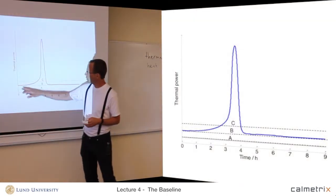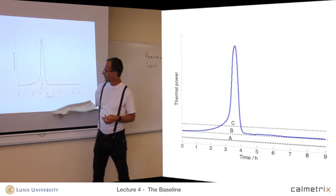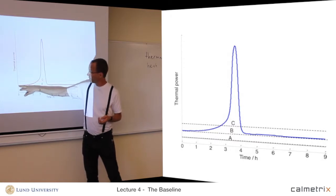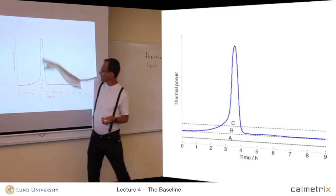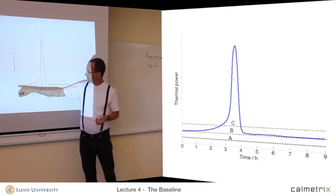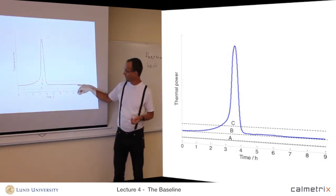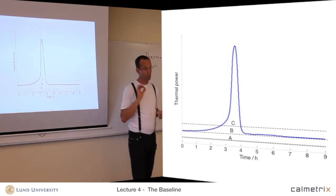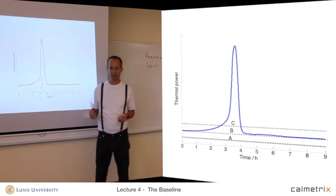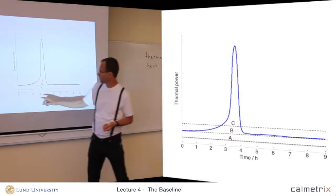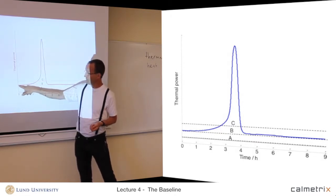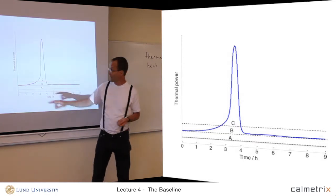We look at thermal power as a function of time. Initially we see a constant value of thermal power, then it increases, peaks, and then goes down to the same value again. This reaction is retarded — it's not just calcium sulfate hemihydrate and water; it's also retarded, and it doesn't start until after half an hour or an hour. So here, nothing is happening.